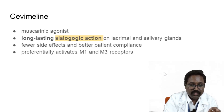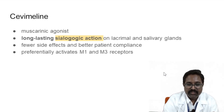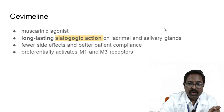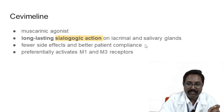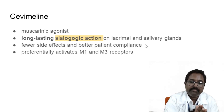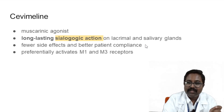A recent new drug, cevimeline, is also a muscarinic agonist acting similar to pilocarpine but with the advantage of longer duration of action. It has long-lasting sialogogue action on the lacrimal and salivary glands and can also be used in treatment of xerostomia in Sjögren's syndrome, particularly activating M3 receptors.